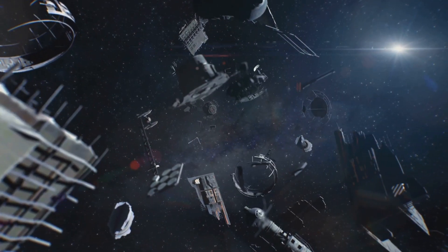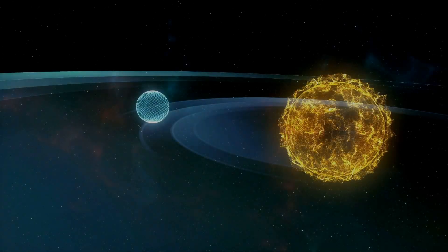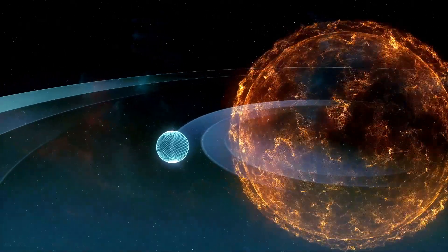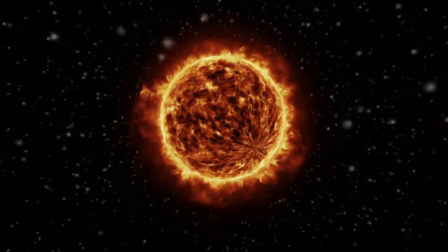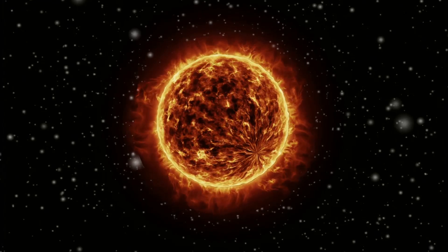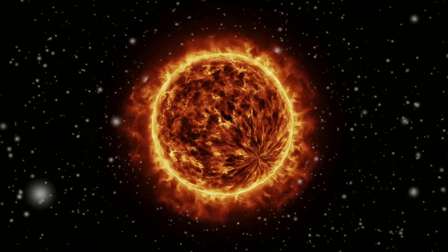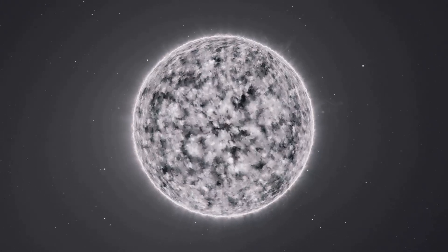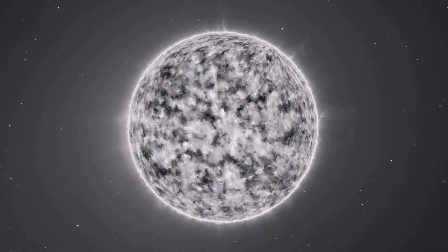Now let's explore the real cosmic graveyards. Imagine drifting through a region of space where stars, once brilliant and fiery, have exhausted their nuclear fuel. These stellar remnants, now cold and dark, litter the cosmos like tombstones in an ancient cemetery. Some, like white dwarfs, slowly cool over billions of years, their light fading until they become invisible ghosts. Others, more massive stars, meet a spectacular end, collapsing under their own gravity to form neutron stars or black holes.